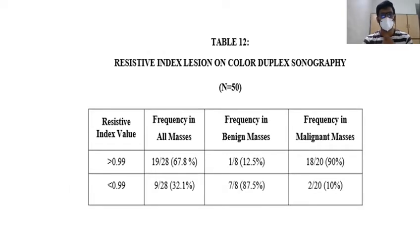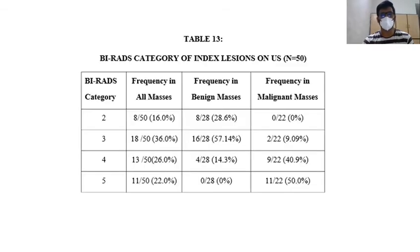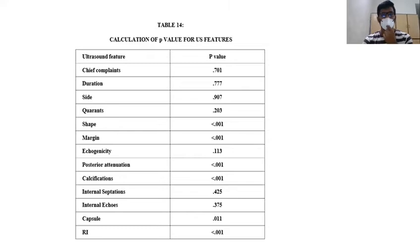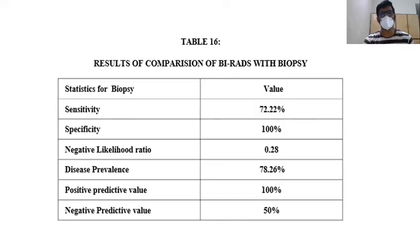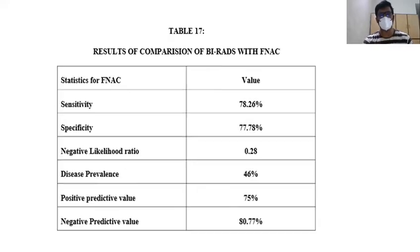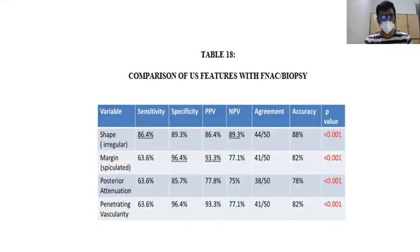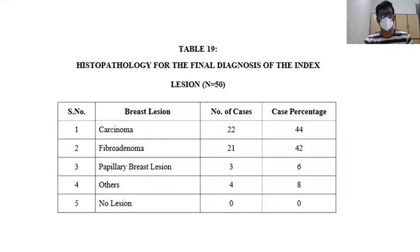Further tables show frequency of resistive index of lesions on color Doppler sonography, frequency of BIRADS category of index lesions on ultrasound, calculation of p-value for ultrasound features, calculation of significance for BIRADS, results of comparison of BIRADS with biopsy, and results of comparison of BIRADS with FNAC.